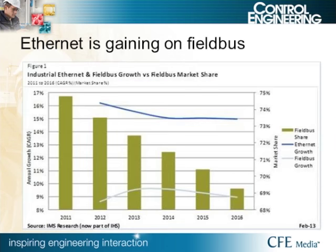The 'World Market for Industrial Ethernet Switches and Field Bus Technologies, 2013 Edition' from IHS suggests that within 10 to 15 years, industrial Ethernet will be the dominant network technology in industrial environments, and almost all components will offer Ethernet connectivity as standard. Field bus protocols accounted for 75% of new industrial automation component network connections in 2011, projected to fall to 69% in 2016. New network connections using field bus are still ahead of Ethernet, yet growth of Ethernet connections is expected to be considerably higher through 2016.